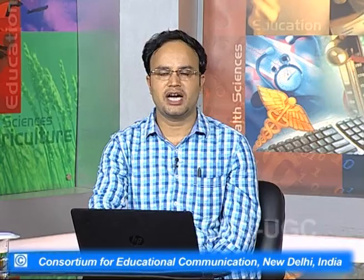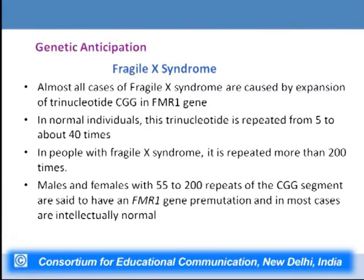Fragile X syndrome leads to various developmental and cognitive problems and is caused by a defect in the FMR1 gene. There is a CGG repeat in FMR1, and if the number increases beyond 40 trinucleotide repeats, this syndrome can result. Individuals with more than 200 repeats develop Fragile X syndrome, whereas those with 55–200 repeats are said to have a gene premutation and are usually normal.